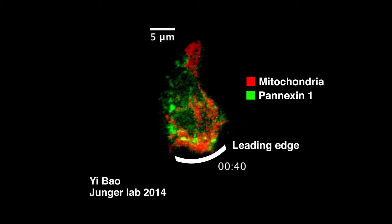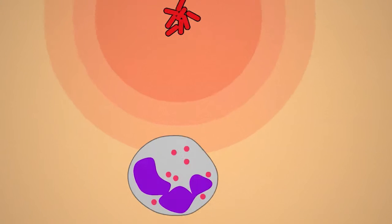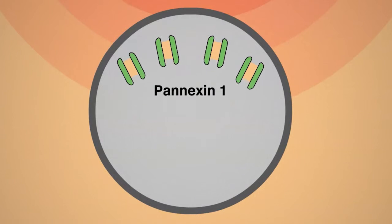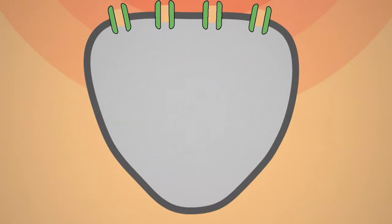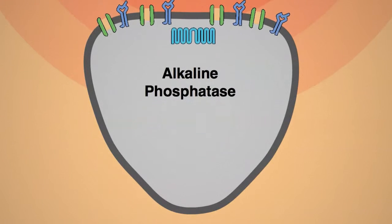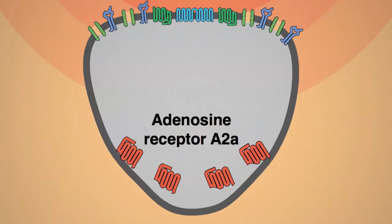During cell polarization, a number of critical signaling molecules translocate to specific regions of a stimulated cell. Pannexin-1, CD39, alkaline phosphatase, and A3 adenosine receptors translocate to the leading edge, whereas A2A adenosine receptors move to the back of cells.